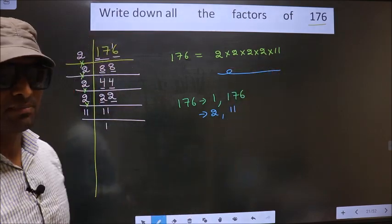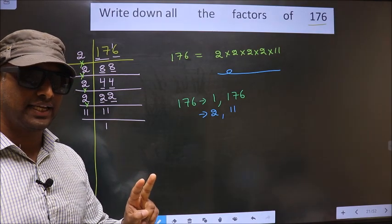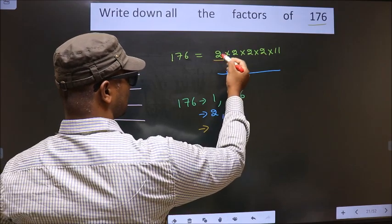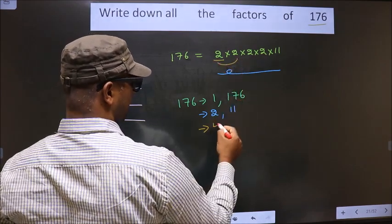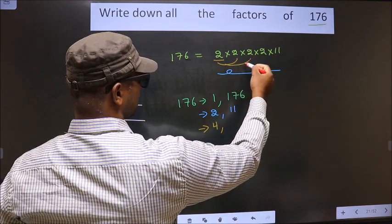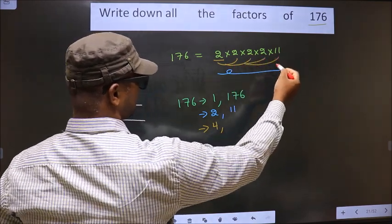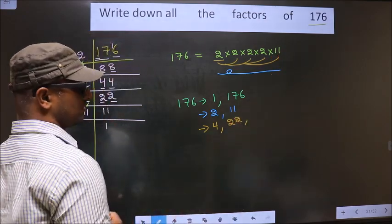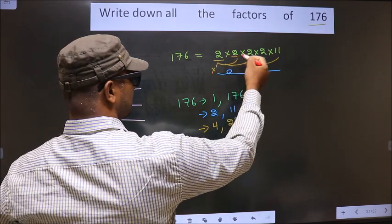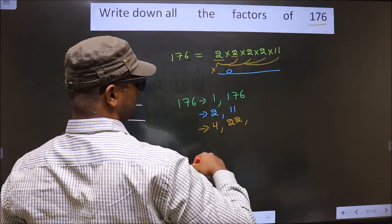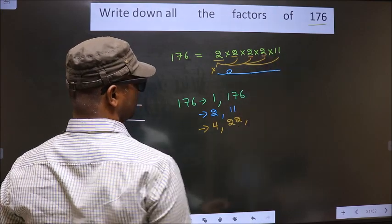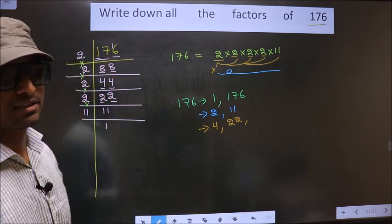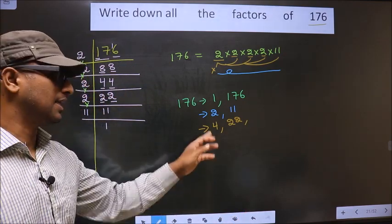Now from these numbers, take a combination of 2 numbers. First I fix 2 and combine with another 2 — I get 4. When I combine 2 with 11, I get 22. Fixing other 2s gives the same results, so no more combinations result in different numbers other than 4 and 22.